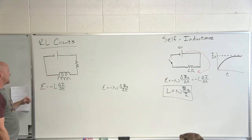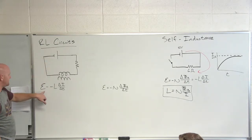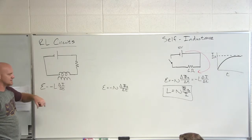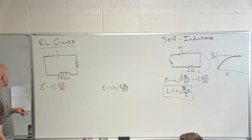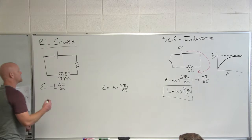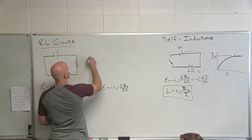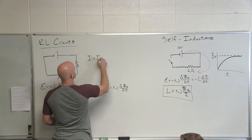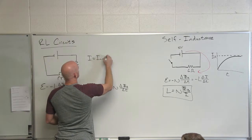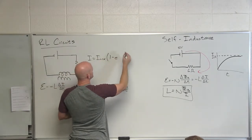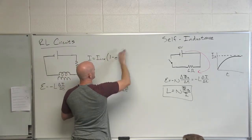The EMF through an inductor is negative L times ΔI/ΔT, where that negative means we're opposing the change in current over time. We've seen a graph like this before — something growing exponentially to a maximum value.